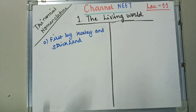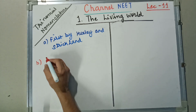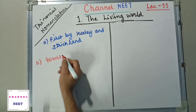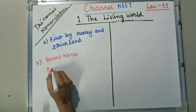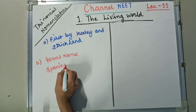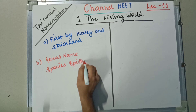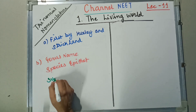What they considered while writing Trinomial Nomenclature: first, the genus name; then the species name, or species epithet as we call it; and the third and final point they included was subspecies.